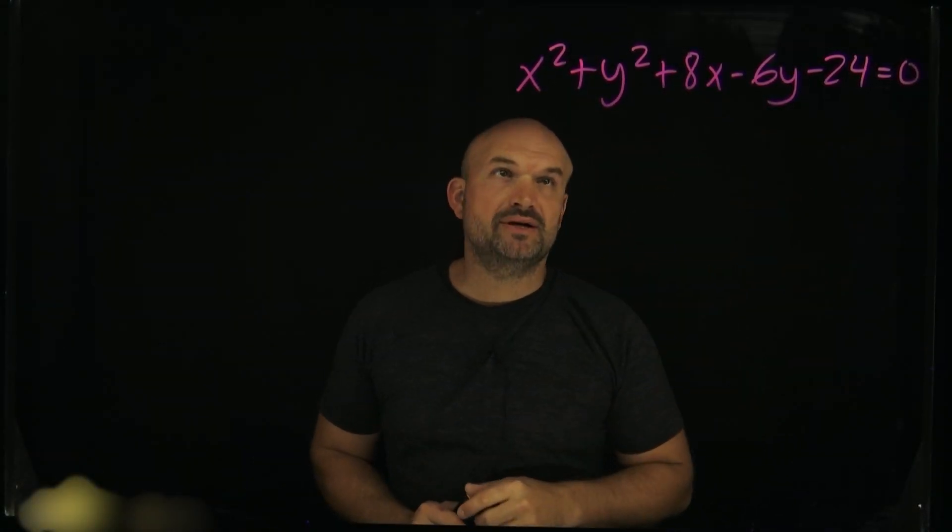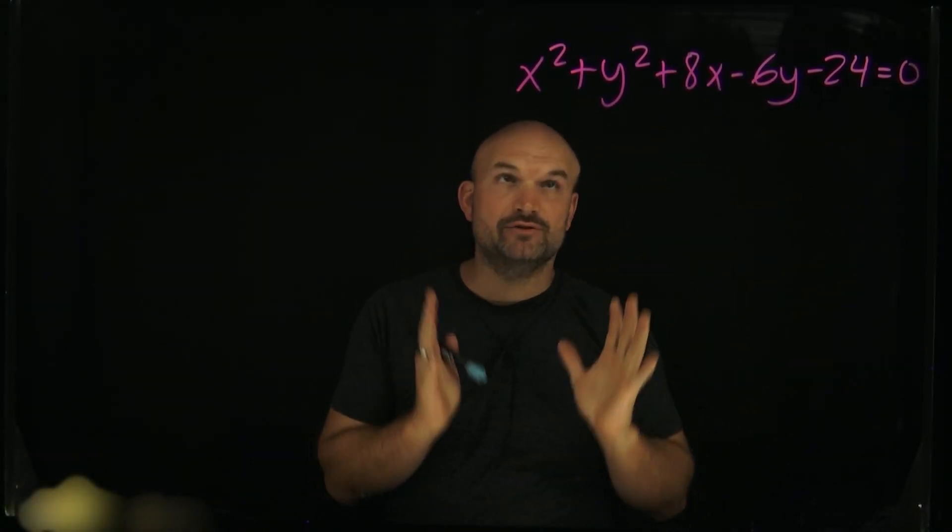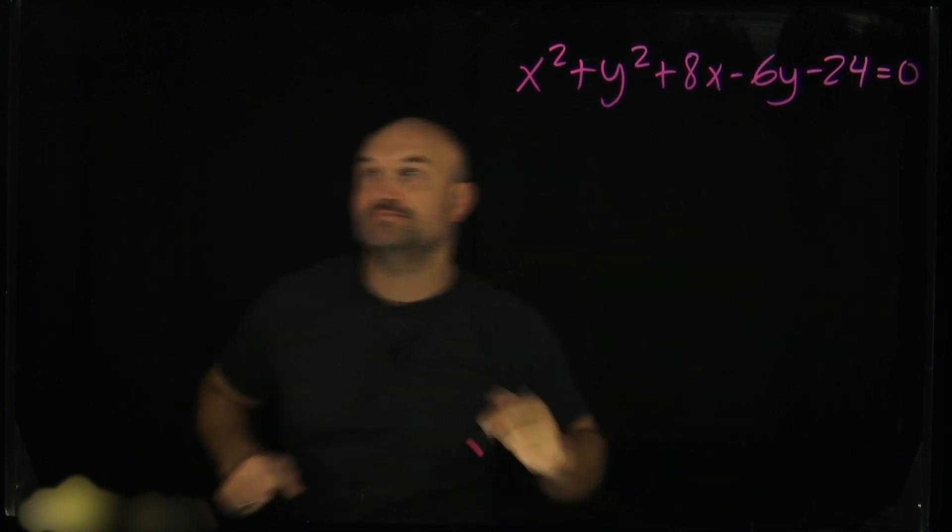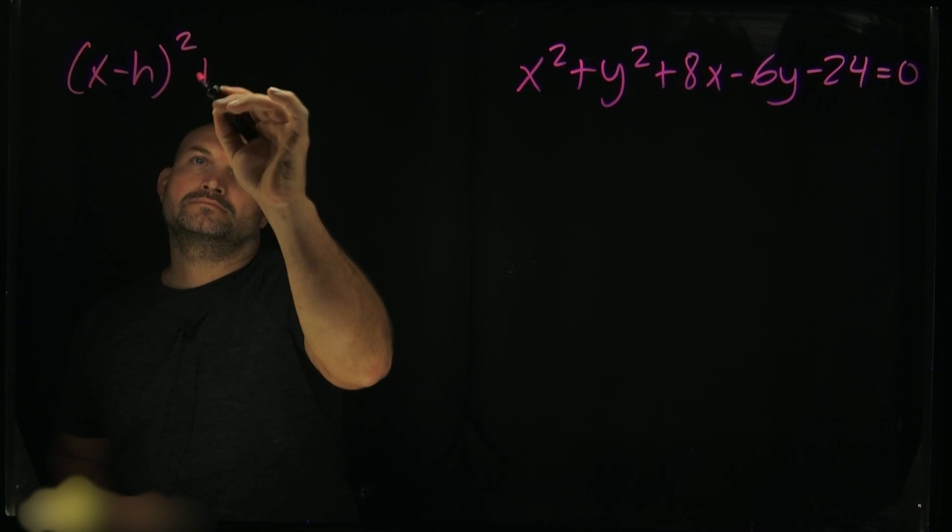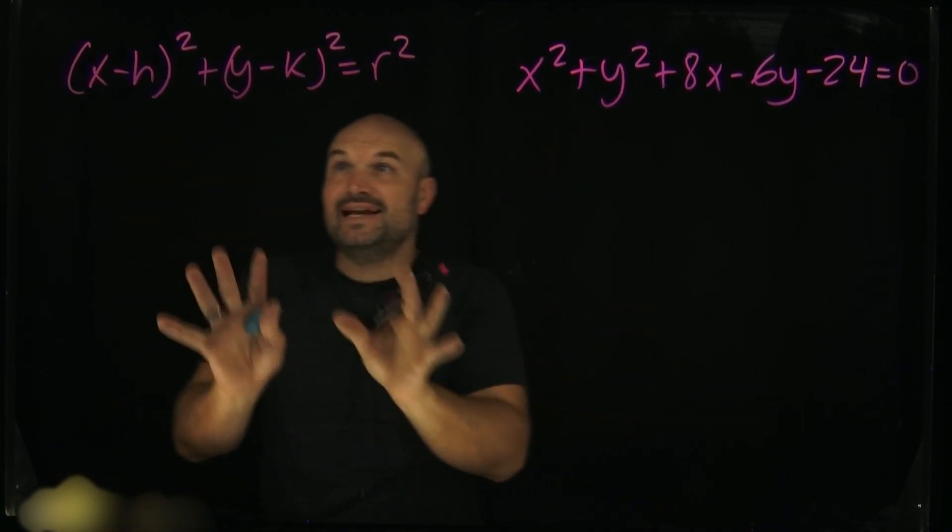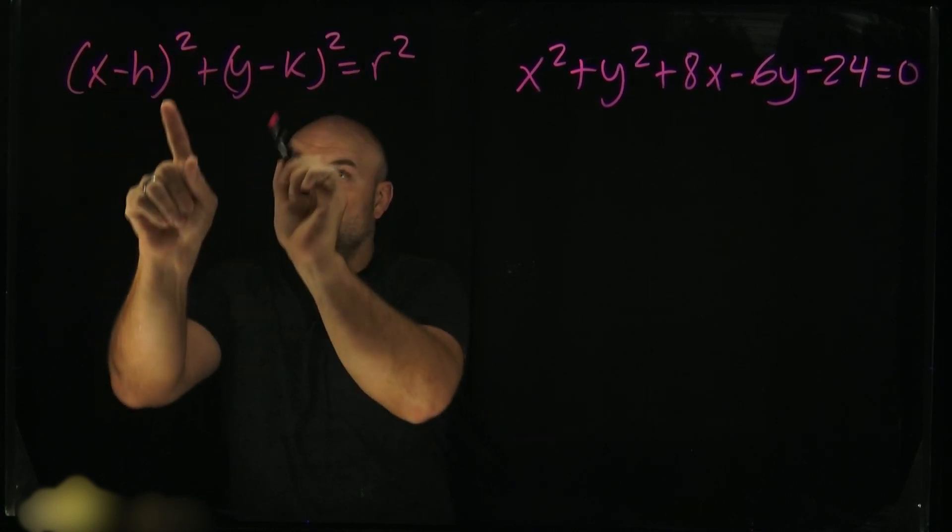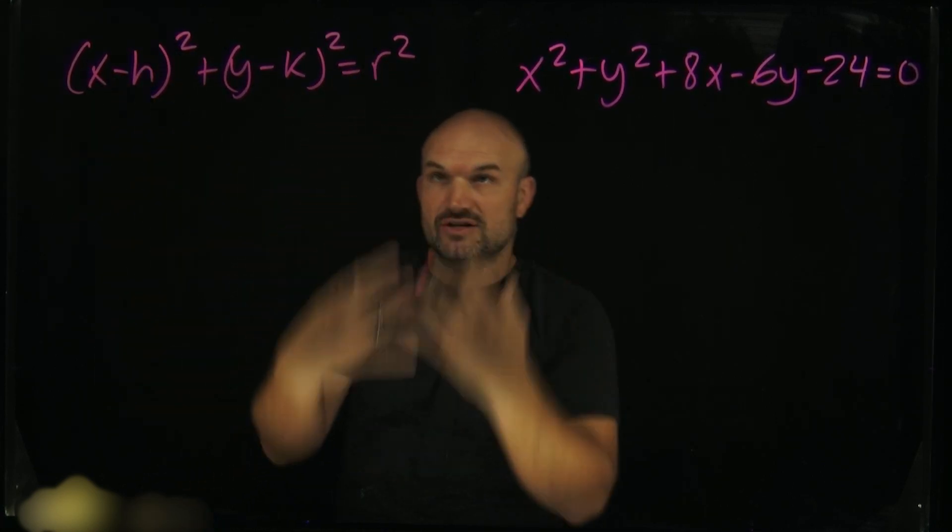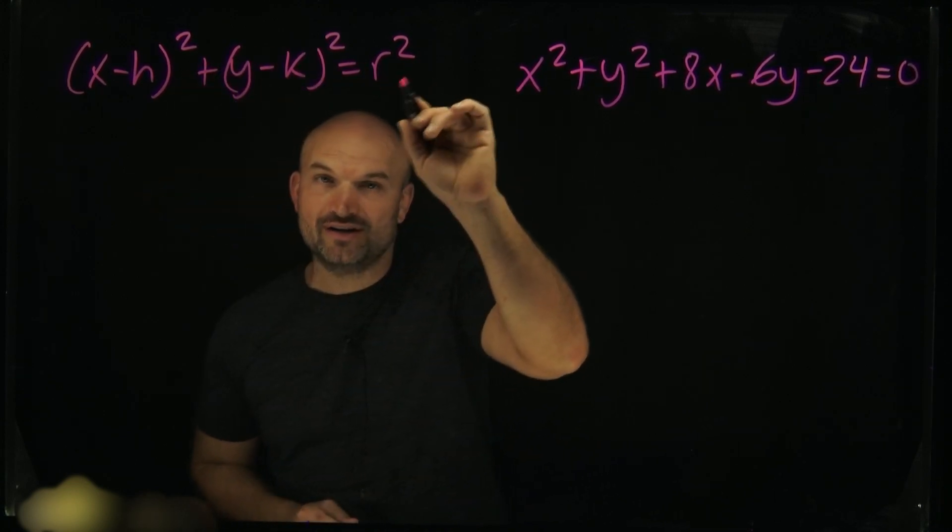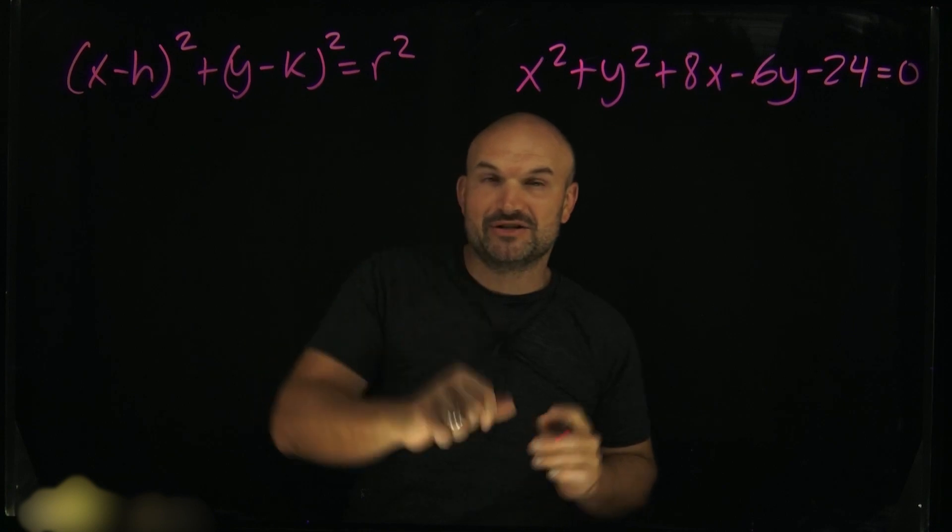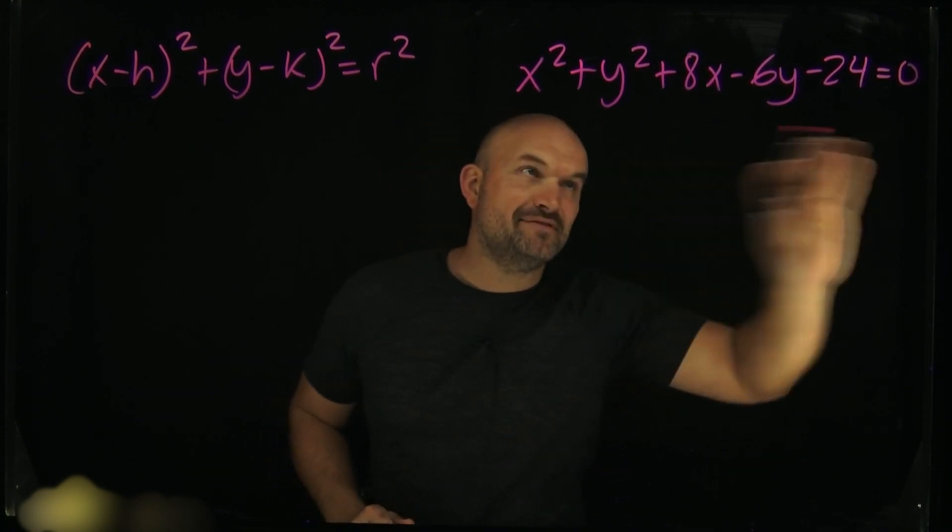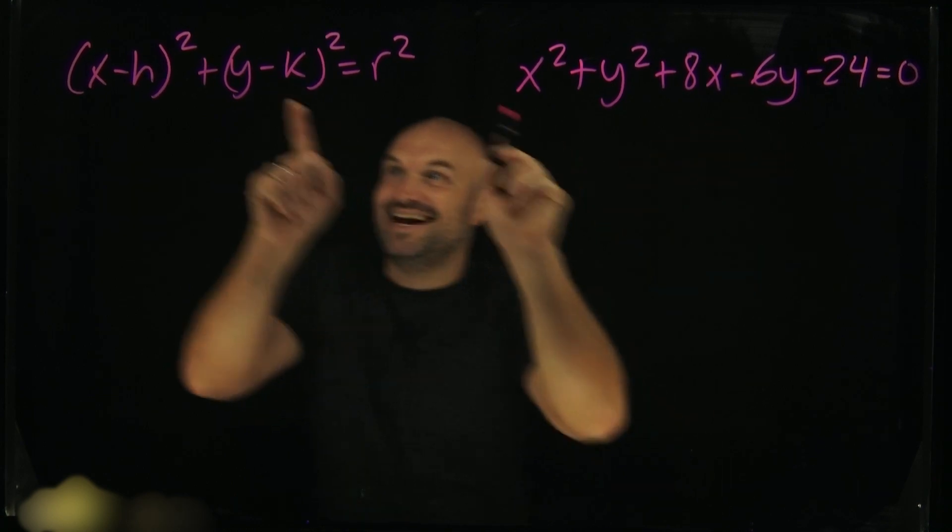On a problem like this, when we want to identify the center and the radius of a circle, we need to first put it into standard form. By looking at it in standard form, if we have this as quantity squared, our h and k represent our center, and r represents our radius. Notice in this standard form, r is being squared, so we have to make sure we're solving for r, which is the radius, not r squared. We have this in general form, which does not look like standard form.